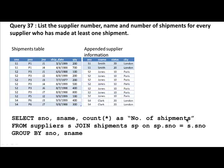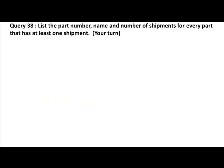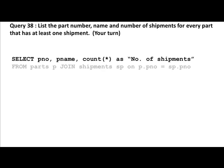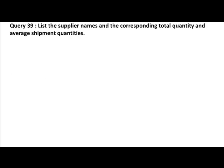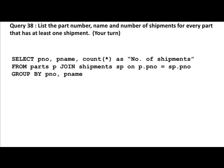The results are going to be S1 Smith 2, S2 Jones 7, S4 Clark 2. For practice, do the same thing: list the part number, name, and number of shipments for every part that has only one shipment. The query is: SELECT part_number, part_name, COUNT(*) AS number_of_shipments — then do the join and GROUP BY part_number. It's just a small modification of what we did for suppliers.